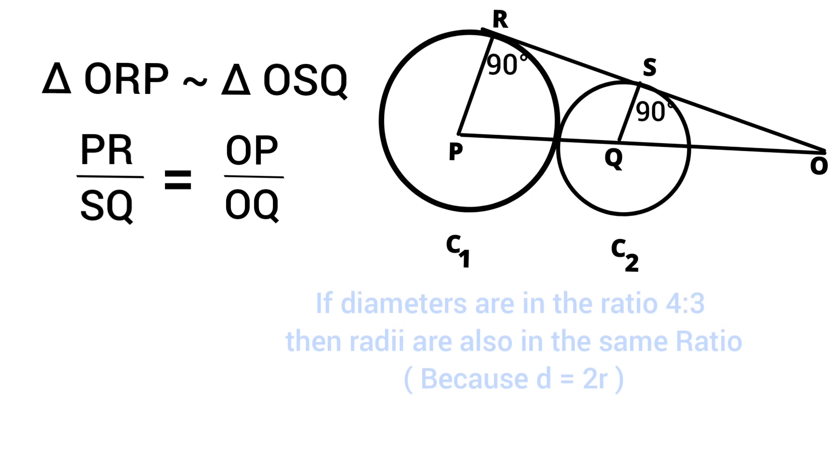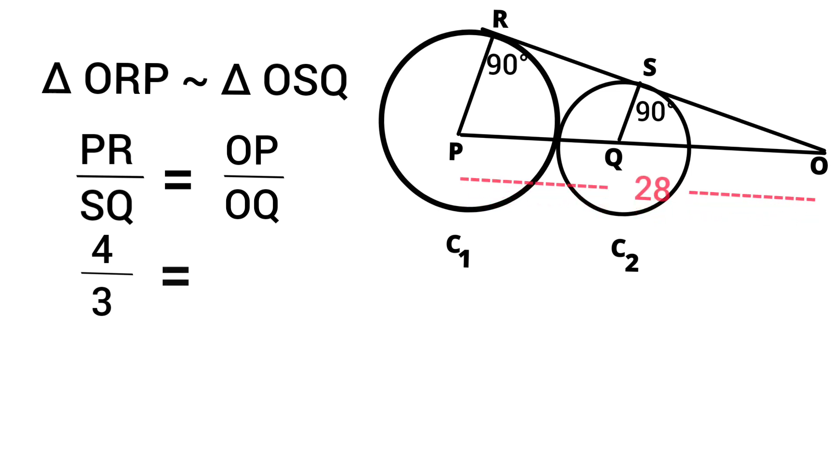If diameters are in the ratio 4 is to 3, then radii are half of the diameters. So they are also in the same ratio. So we can write that PR by SQ equals 4 by 3 equals OP, which we have as 28 divided by OQ.